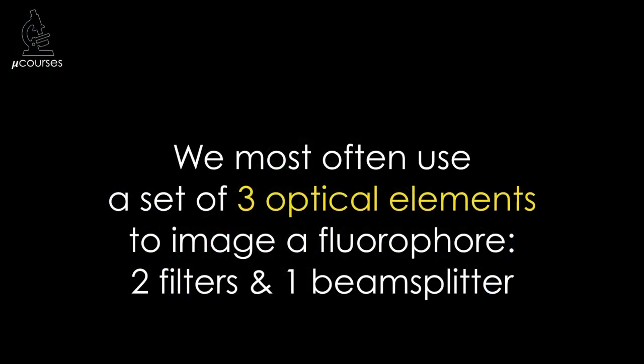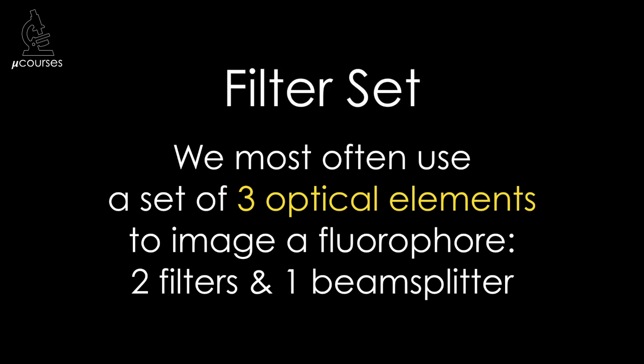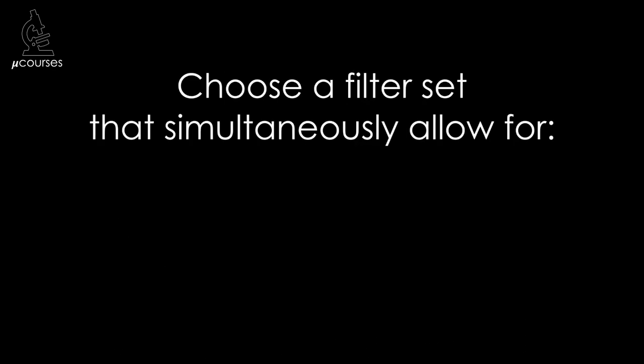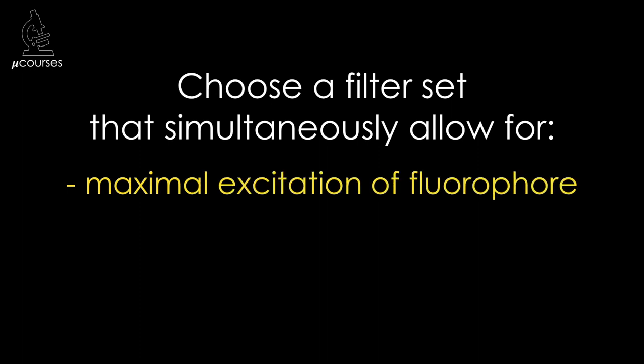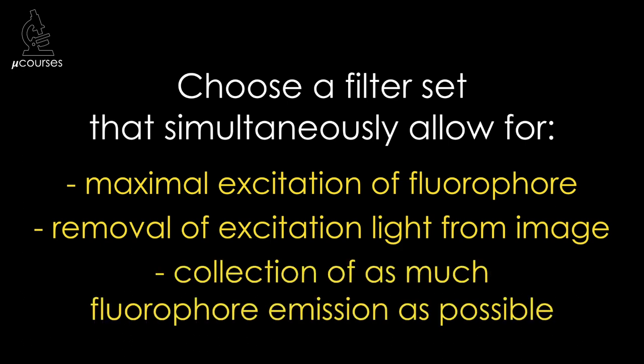To excite a fluorophore and collect the emission light, we most often use a set of three optical elements, which we call the filter set. The filter set is made up of two filters — including the emission filter — and one beam splitter. The optical elements in the filter set should be chosen to simultaneously allow for maximum excitation of the fluorophore, removal of excitation light from the image, and collection of as much fluorophore emission as possible.